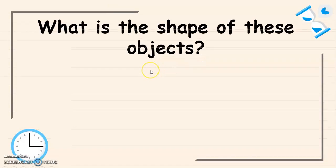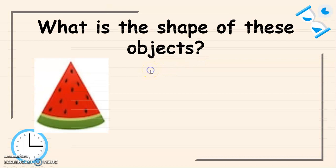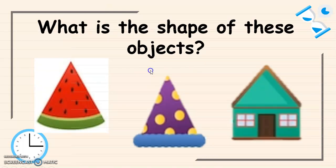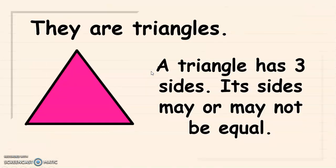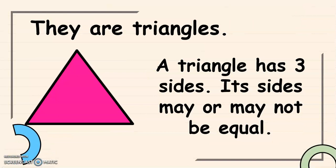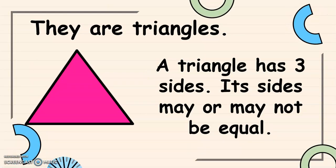What is the shape of these objects? Very good! They are triangles. And a triangle has 3 sides. Its sides may or may not be equal.